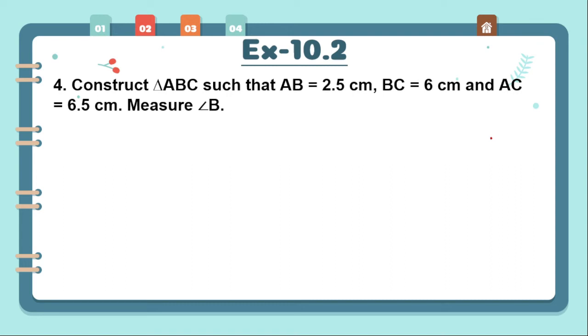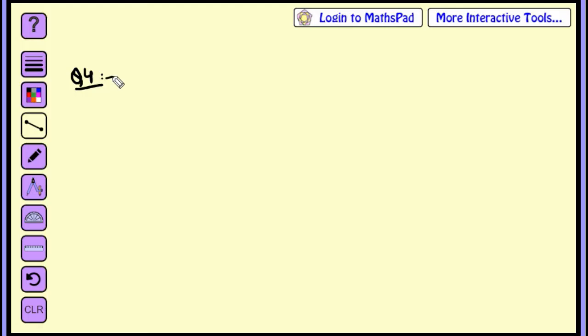Now question number 4 is: Construct triangle ABC such that AB is equal to 2.5cm, BC is 6cm, and AC is 6.5cm. And measure angle B. So we will measure angle B. Now we will show you how this triangle is.